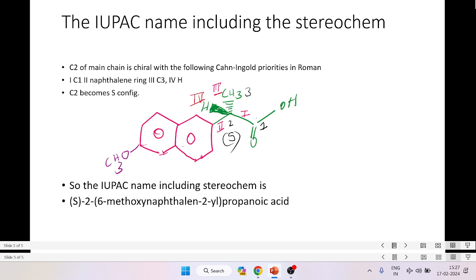So now if you see, if you look at the Cahn-Ingold priorities, you will see that the carboxyl group gets priority 1, naphthalene ring gets priority 2, methyl group gets priority 3, the hydrogen gets priority 4. The hydrogen is towards us, and therefore this configuration will be S. So the IUPAC name including the stereochemistry is (S)-2-(6-methoxynaphthalen-2-yl)propanoic acid. Thank you.